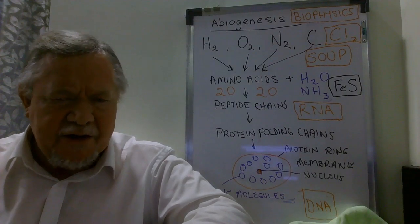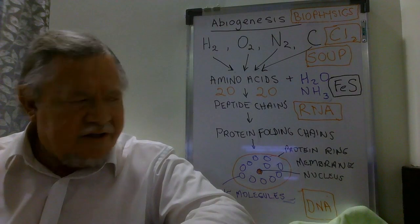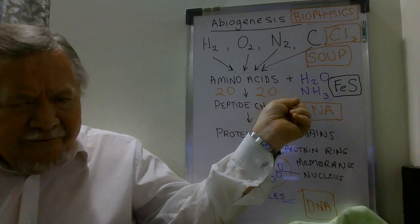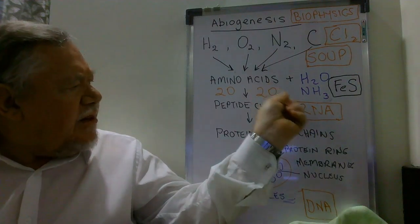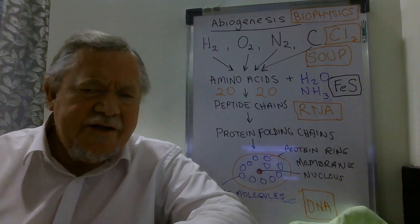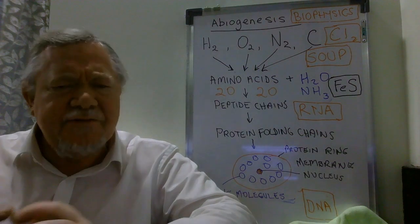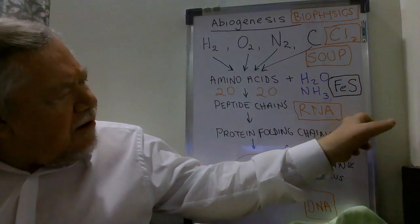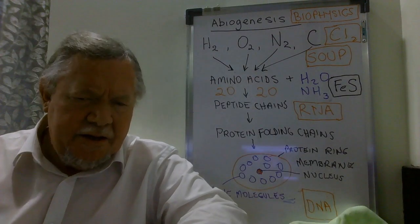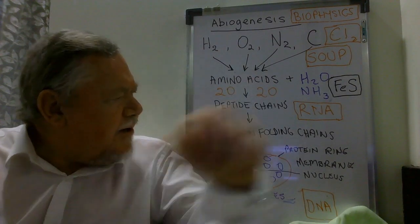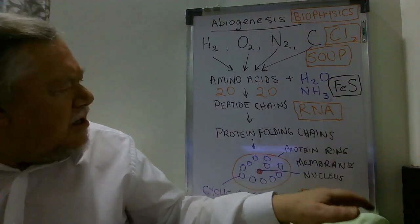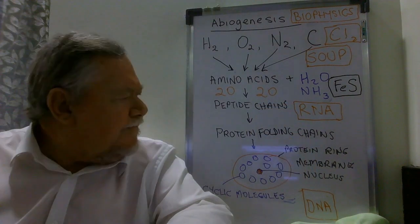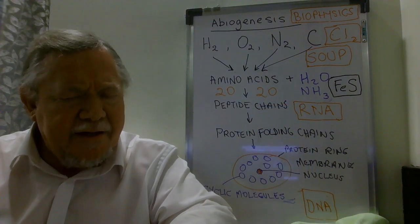So the amino acids again form chains just like I said, and they form peptide chains. They're called peptides, so amino acid chains forming together are called peptides, and these are the beginnings of RNA. So now RNA, as you know, RNA precedes DNA.